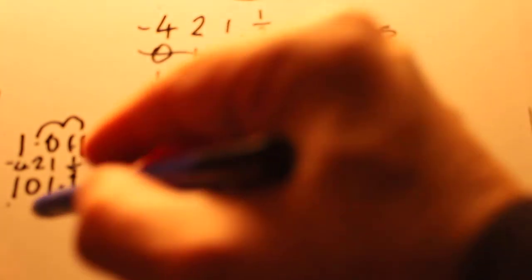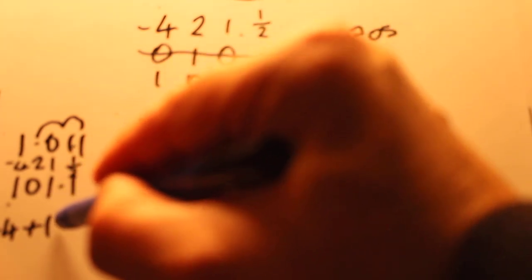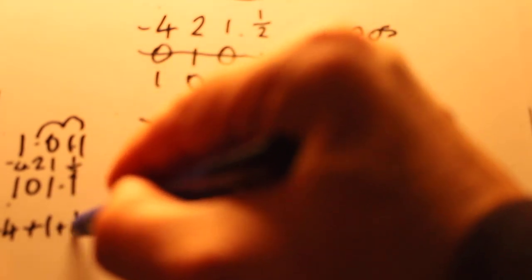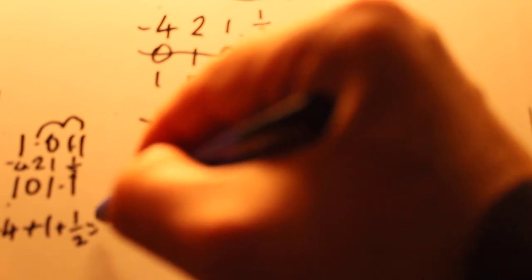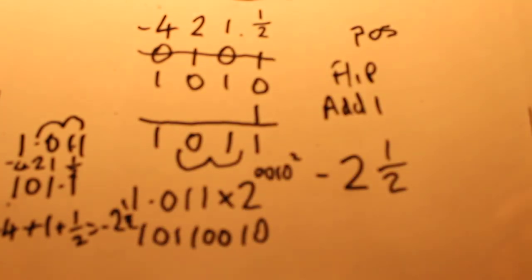We would have minus four, two, one and the other side the decimal point would be a half. So that would be minus four plus one plus a half and as you know that is minus two and a half simple as that.